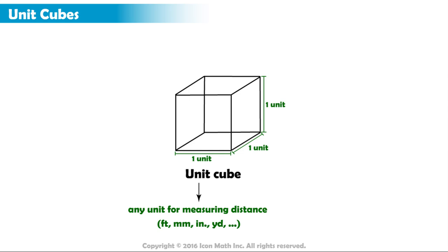For example, if the unit we are using is feet, then the sides of the squares would each be one foot in length. And if the unit we are using is millimeters, then the sides of the squares would each be one millimeter in length, and so on for all other units of length.